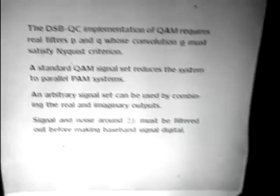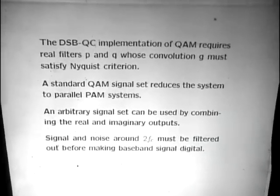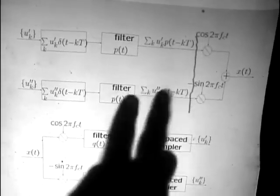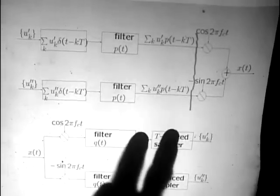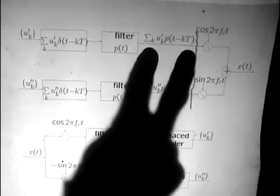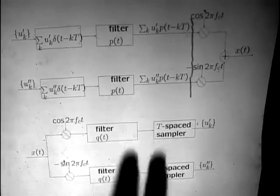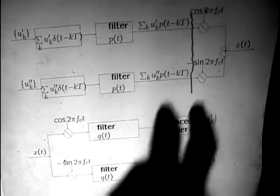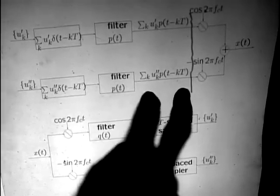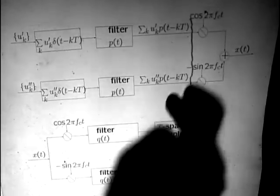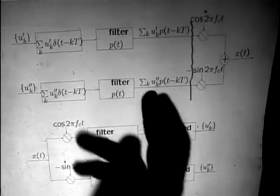When we use this double sideband quadrature carrier implementation of QAM, the filters P and Q really have to be real. Why? Because otherwise we're mixing what's going on in the I channel with what's going on in the Q channel. This will not be a real waveform, so you can't just multiply it by a cosine wave. In the complex exponential implementation, you multiply by e^(2πi fc t) and take the real part, and everything comes out.